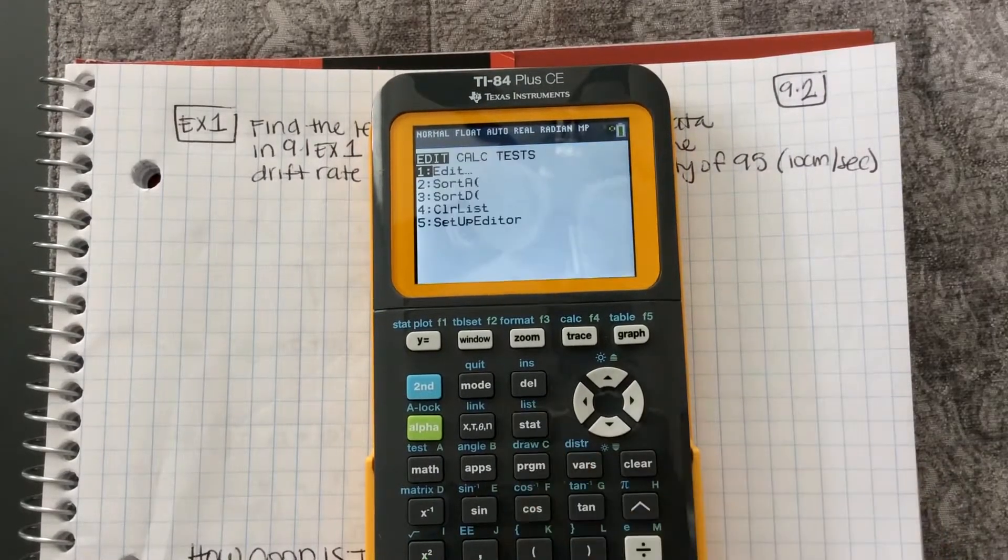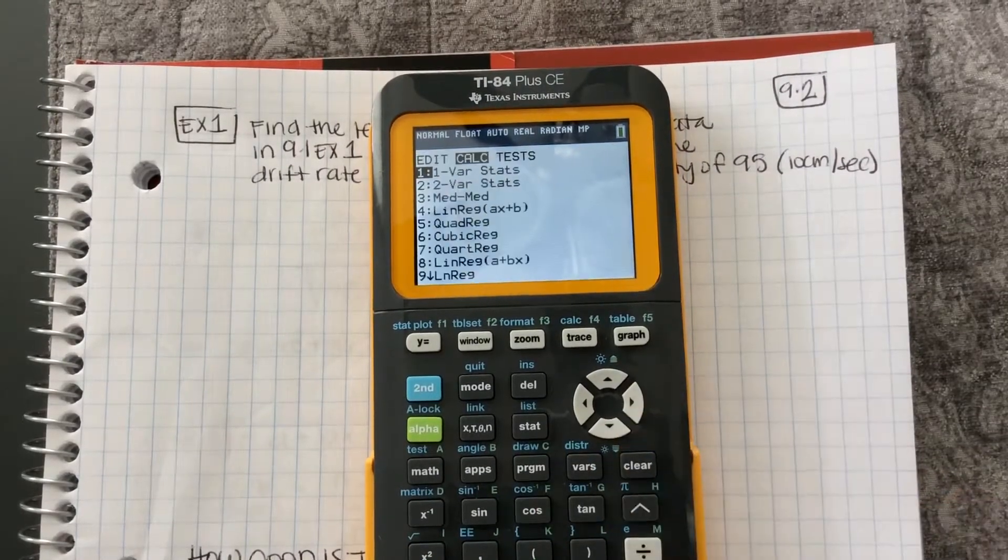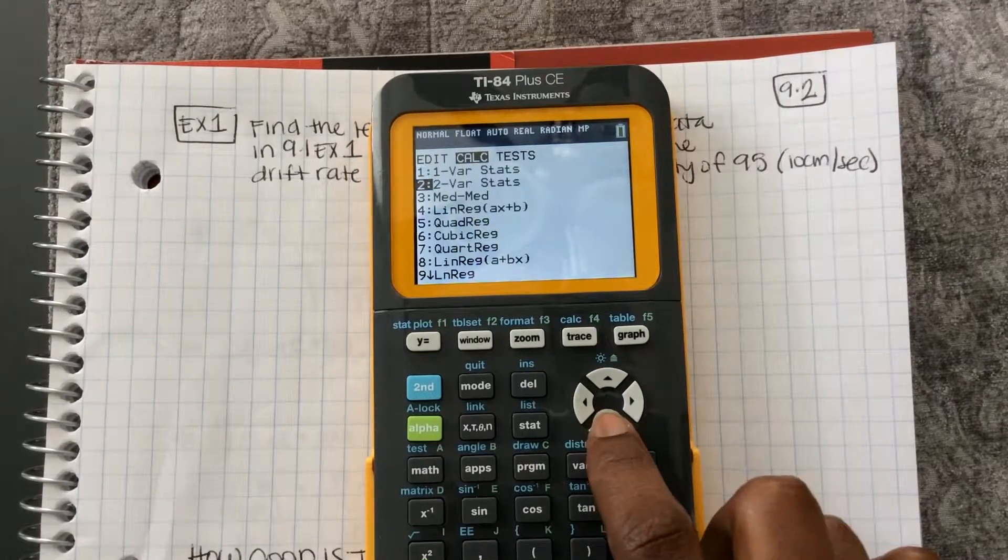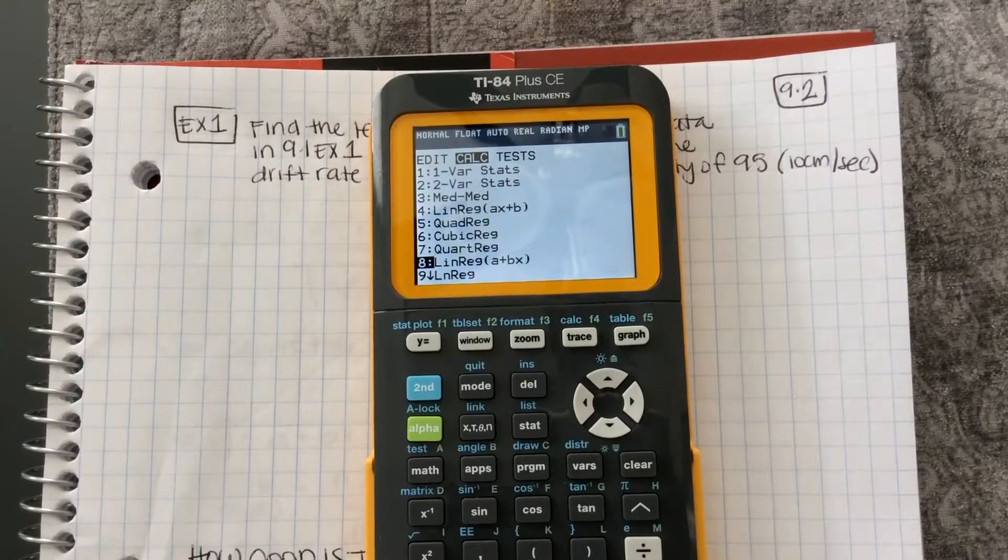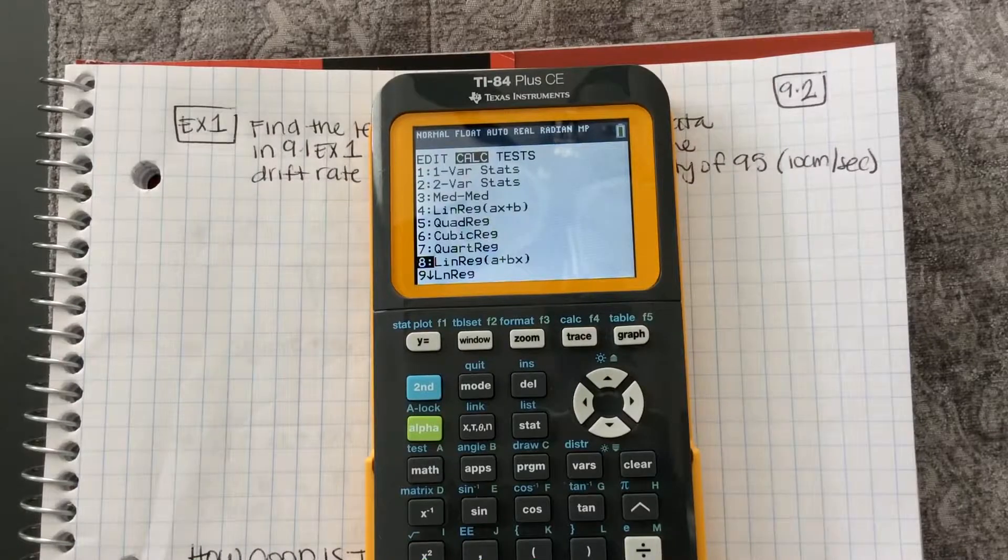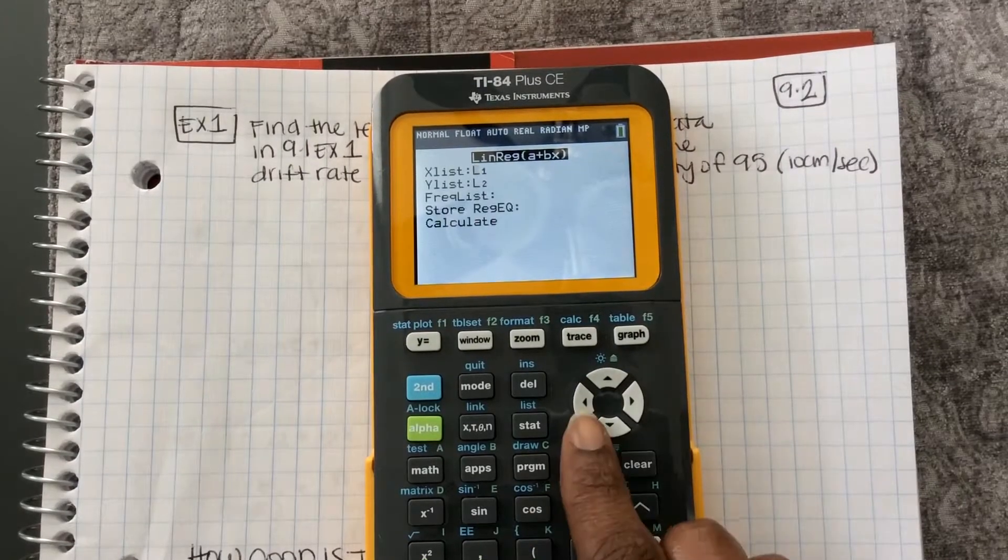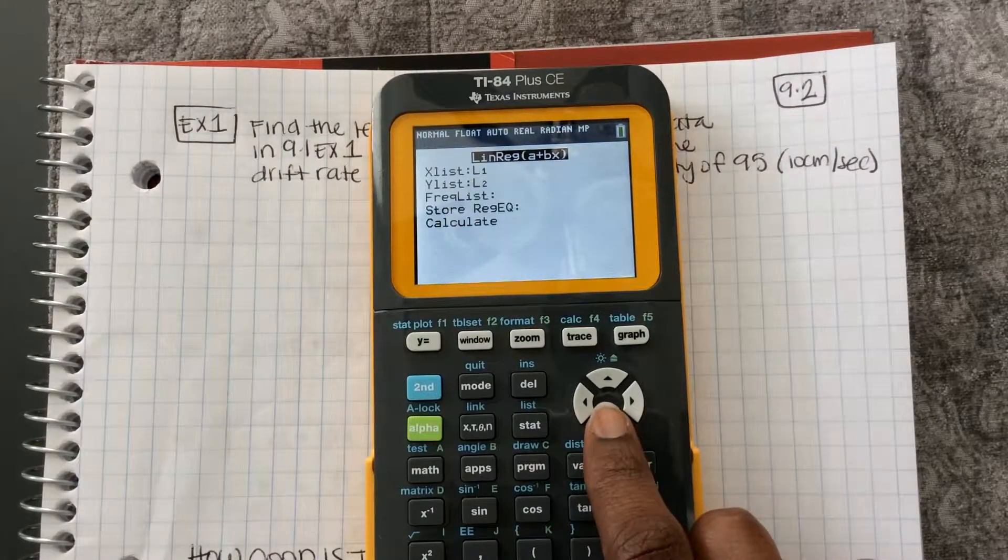first I'll click stat. Then I'm going to go over to calculate. Remember we want to go down to number 8 or you can type the number 8, a plus bx. Press enter. My x is in L1, my y is in L2.